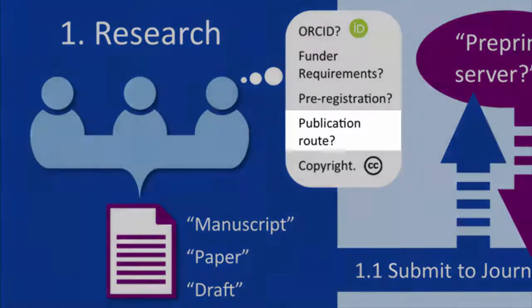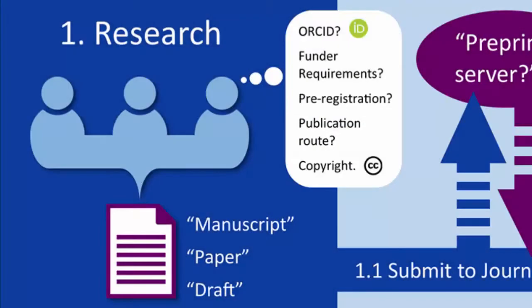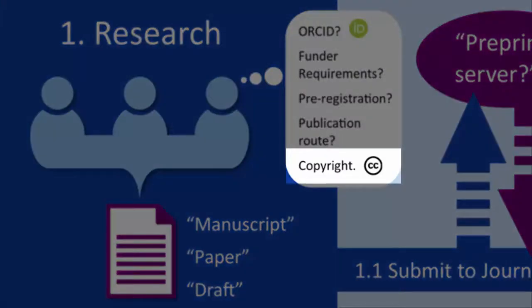You will also need to think about the publication route you wish to follow from the start of your research, as this will help you to tailor your work, increasing your chance of publication. In choosing your publication route you will need to be confident of the copyright license involved. Make sure you know who will own the copyright at the end of the publication route you choose, as well as the level of restriction you may want to attach to your work, and think about any future implications these decisions may bring.